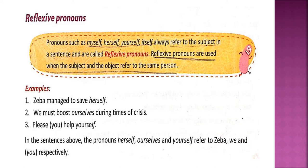We often use reflexive pronouns when the subject and object of a verb refer to the same person or thing. For example: he cut himself on the broken glass.